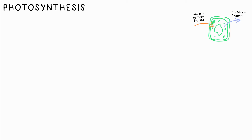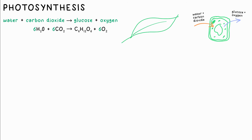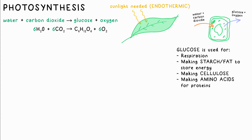Photosynthesis happens in chlorophyll and chloroplasts in plant cells to provide food for the plant. Here's the word and balanced chemical equation for it. As energy is needed in the form of light to make this reaction happen, it is an endothermic reaction. The glucose made from photosynthesis is used for respiration, or it's turned into starch or fat as a store of energy.